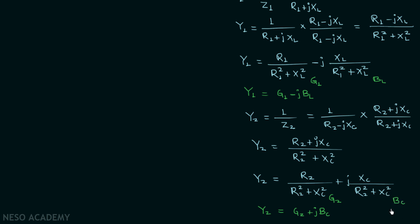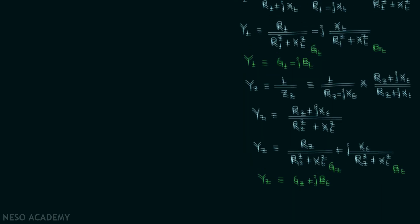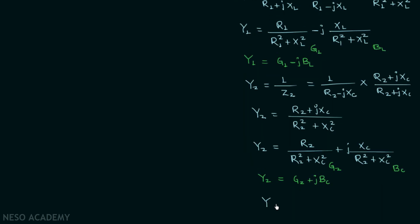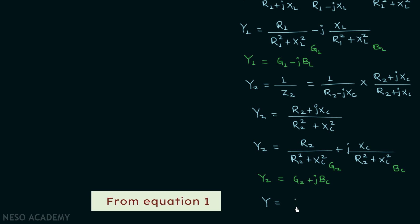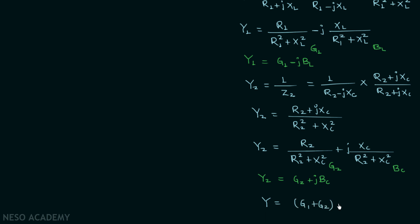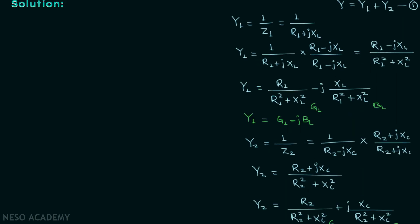We can now say that the final admittance Y, which equals Y1 plus Y2, is equal to (G1 + G2) + j(BC - BL). So we are done with the general case and will now move on to the specific question.